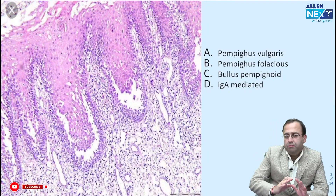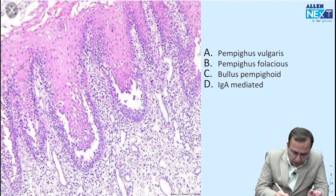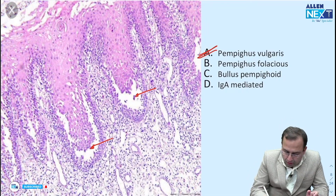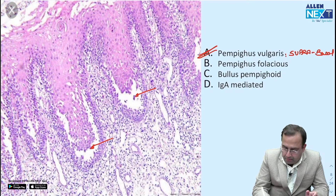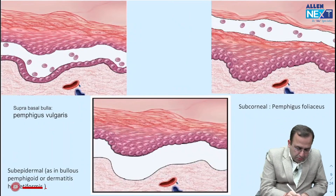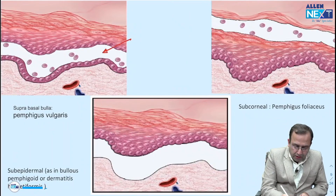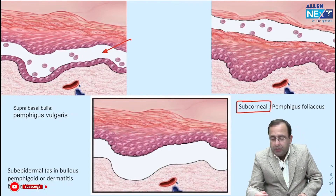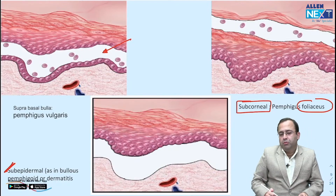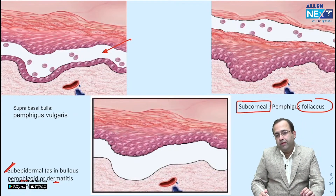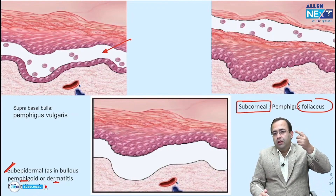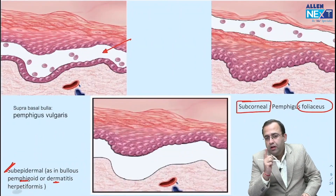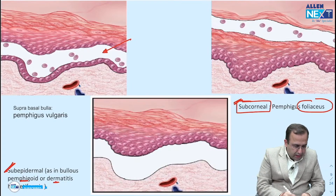Next — you will be able to answer both these questions just on the basis of the bulla seen. You can clearly make out this is a suprabasal bulla — that is Pemphigus vulgaris. Let us have a quick look at the types of bulla. Suprabasal bulla is present above the basal layer, seen in Pemphigus vulgaris — this was the image given in the paper. Next is the subcorneal bulla, below the corneal layer, seen in Pemphigus follaceus. And lastly is the subepidermal bulla, seen in bullous pemphigoid or Dermatitis herpetiformis.